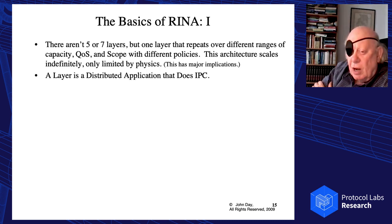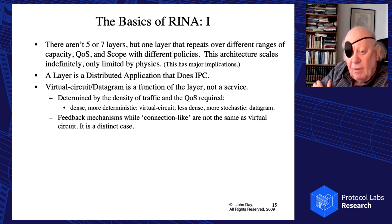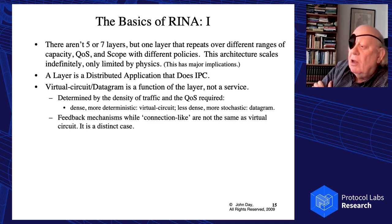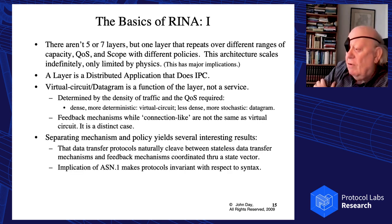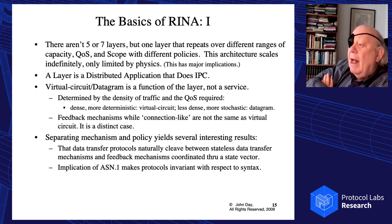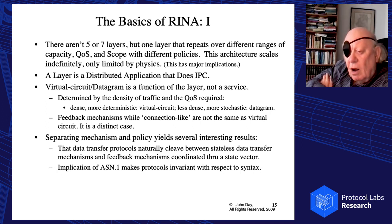There aren't five or seven layers — there's one kind of layer that repeats over different ranges of capacity, quality of service, and scope, with different policies. A layer is a distributed application that does IPC. Virtual circuit and datagram is a function of the layer, not a service. Which one you use is determined by the density of traffic: the denser the traffic, the more connection-like; the less dense, the more connectionless.